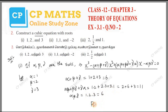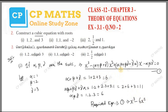Finally, we substitute into the formula. The required equation is: x³ minus 6x² plus 11x minus 6 equals 0. This is the required equation.